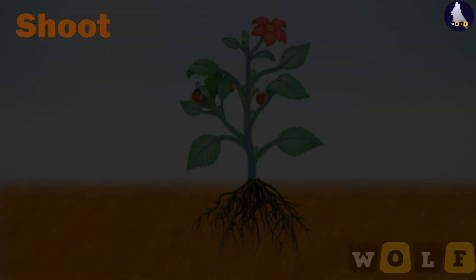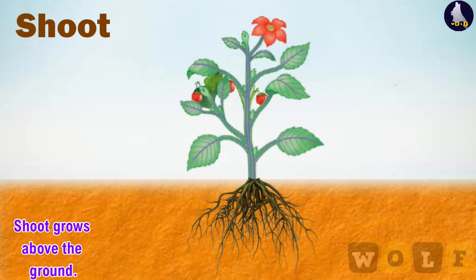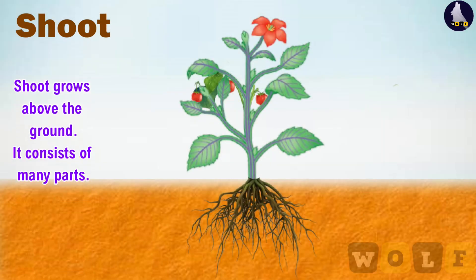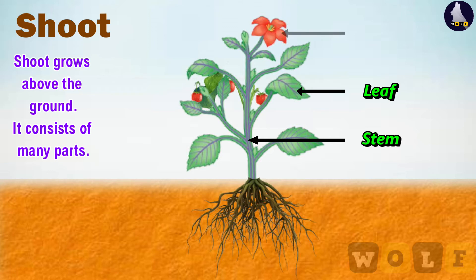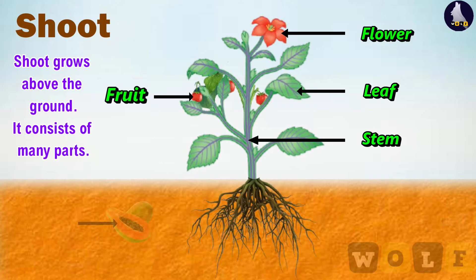The shoot grows above the ground. It consists of many parts: stem, leaf, flower, fruit, and seeds present inside the fruit.